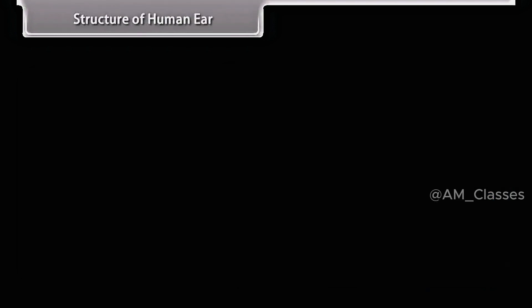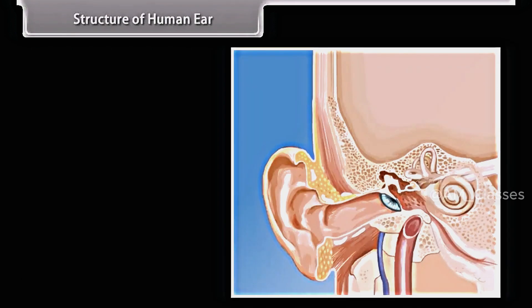Structure of the human ear. The ear consists of three basic parts: the outer ear, the middle ear, and the inner ear. Each part of the ear has a specific role in the task of detecting and interpreting sound.